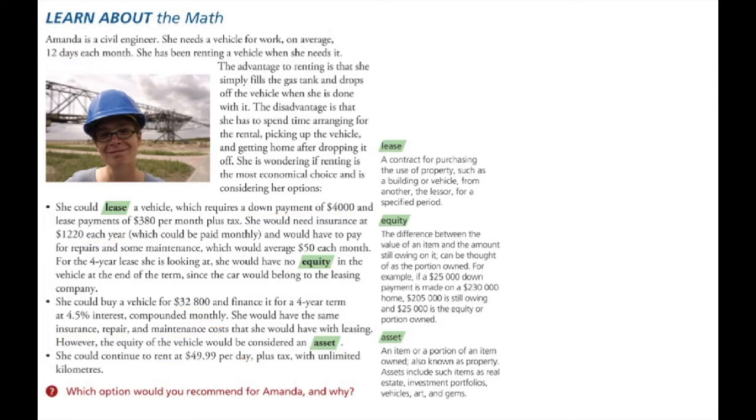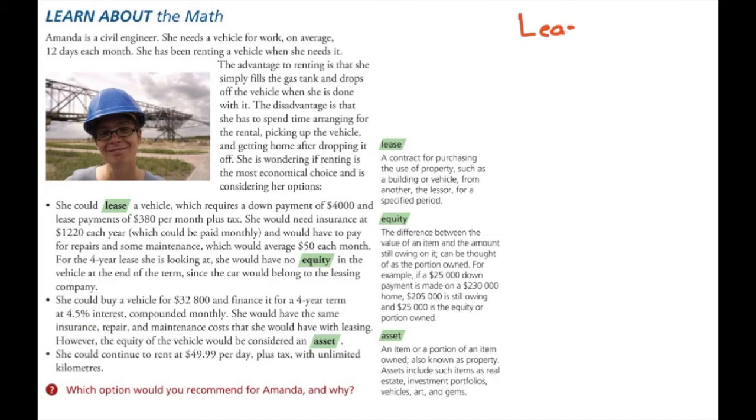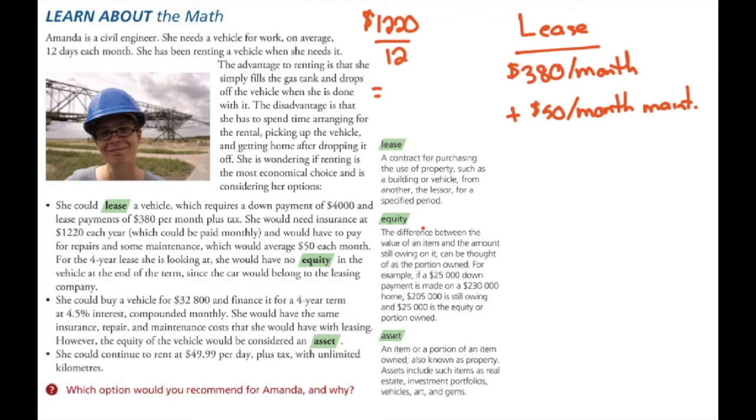I'm just going to clear off the page so we can talk about the lease. So with the lease, she would make a $380 per month payment to the car company. Plus, she would also need to make $50 per month for maintenance. She would also need to pay for her plates every month, which to figure out the cost of the plates, that's $1,220 per year divided by 12, which would be $101.67 a month.